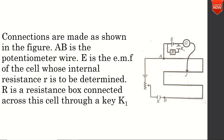The potentiometer wire is connected to the cell. We are talking about the internal resistance of the cell. This forms the primary circuit. The secondary circuit is the line with you.